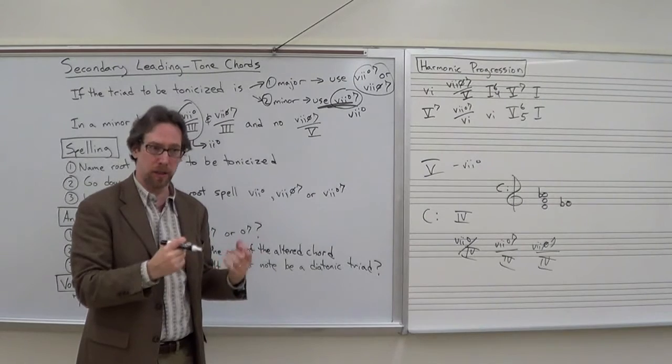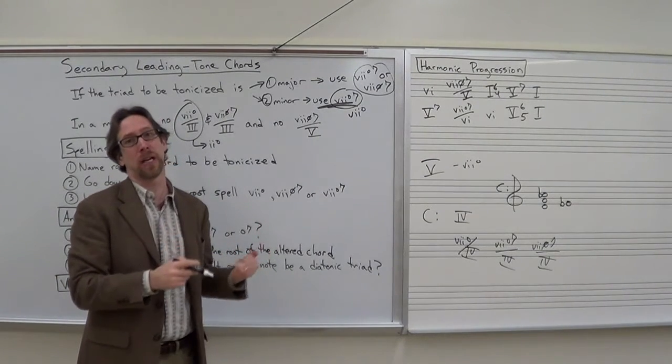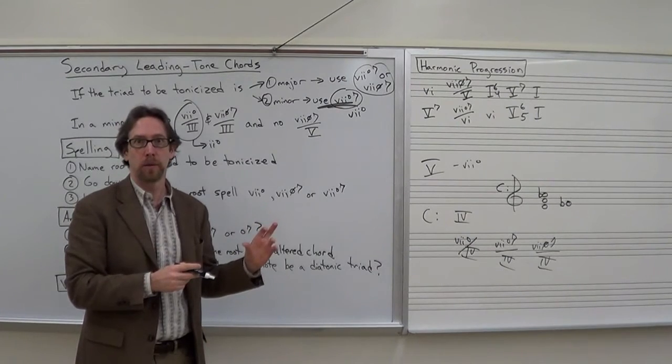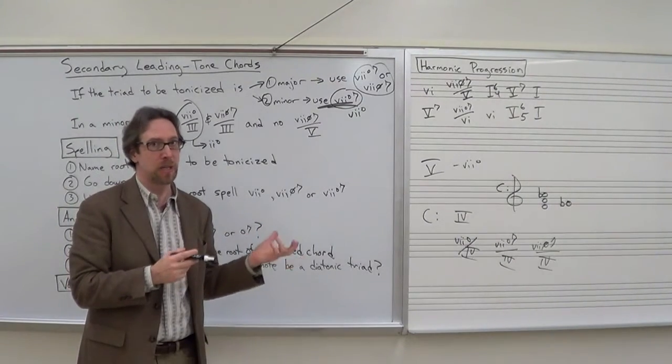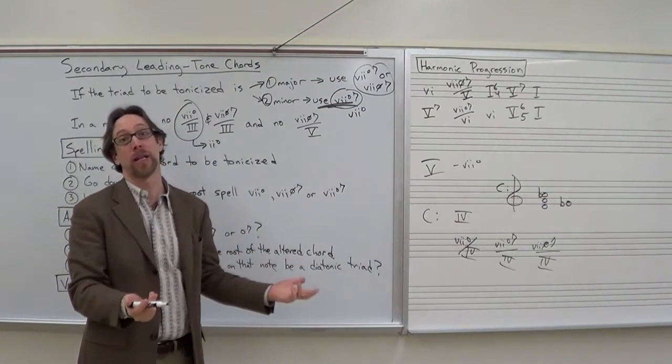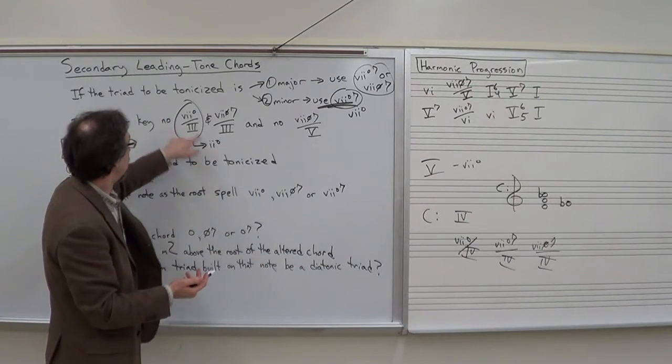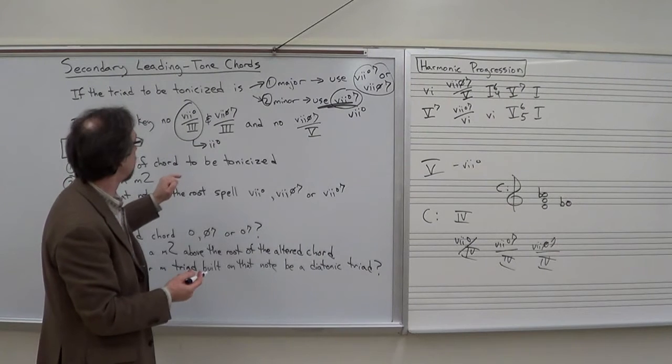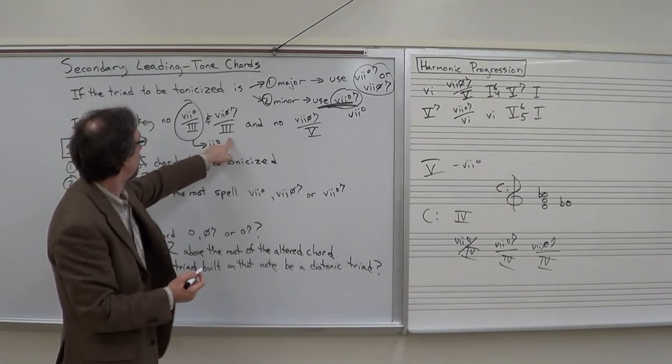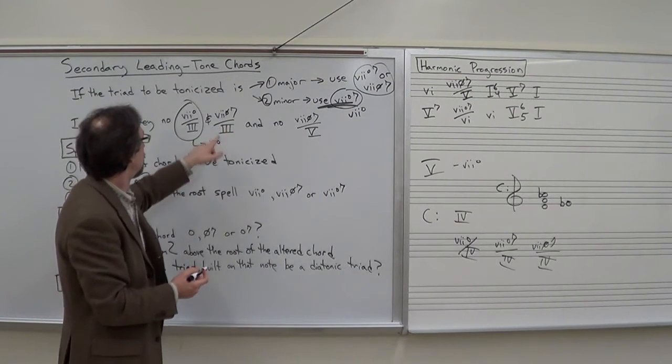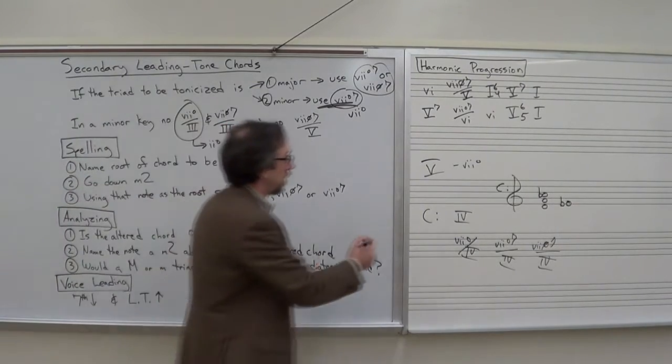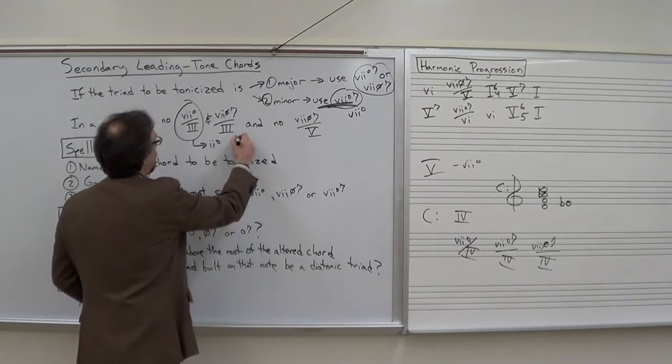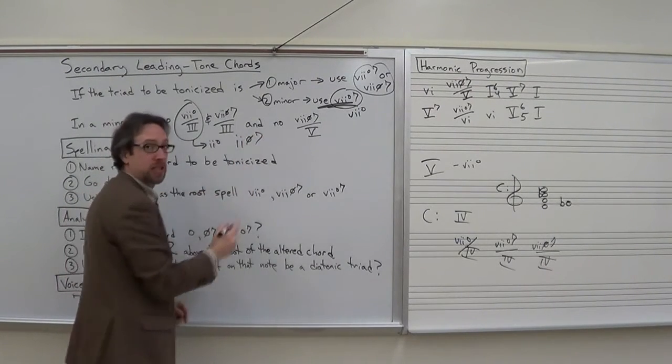The ear will never hear it as a 7 diminished of 3. It's going to hear it as a 2 diminished triad. We have a similar situation like that when we dealt with secondary dominants. A 5 of 4 has the exact same pitches as a 1 chord, therefore it will be heard as a 1 chord. Here, these notes will be heard as a 2 diminished. The other chord that you won't find is the 7 half diminished 7 of 3 for the same reasons.